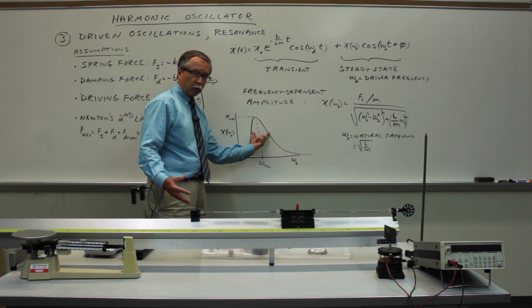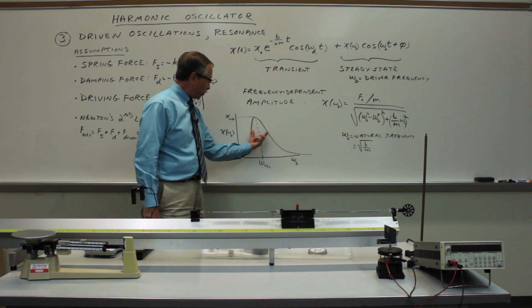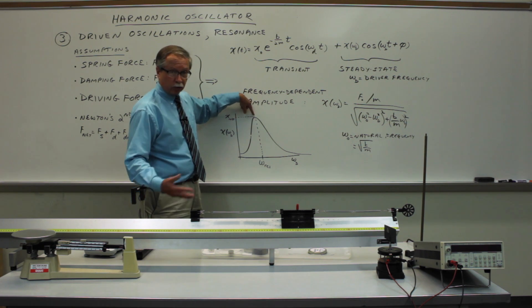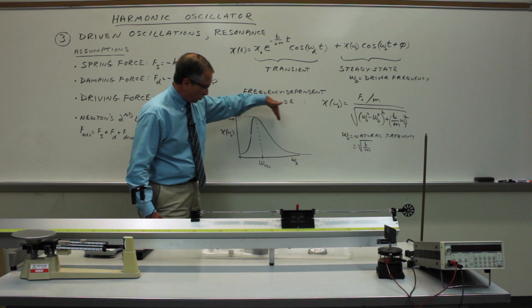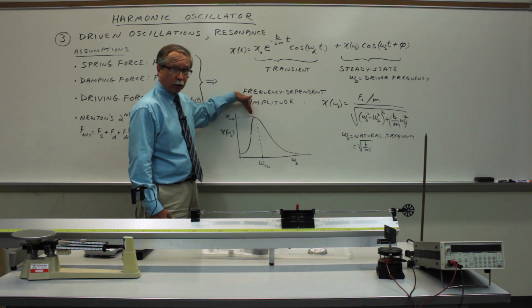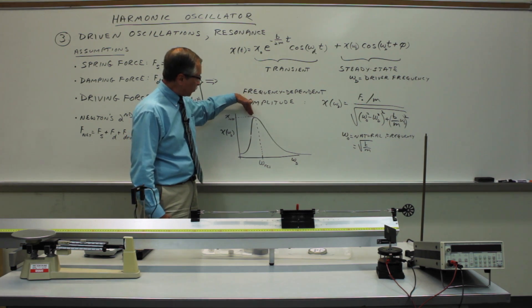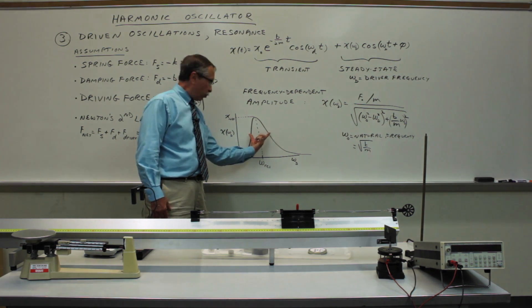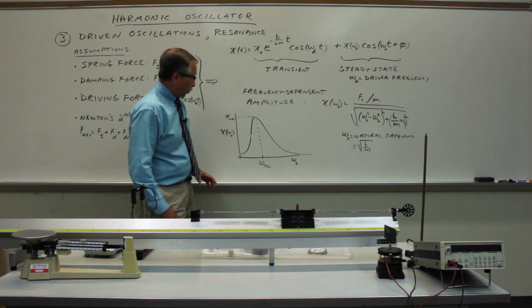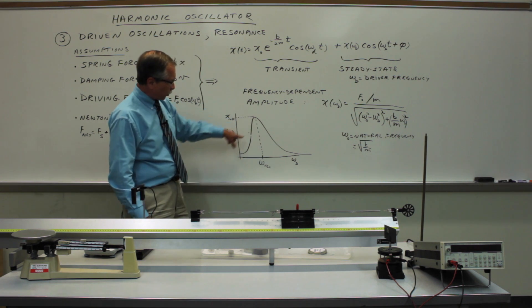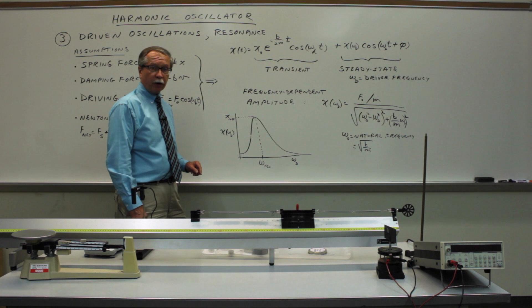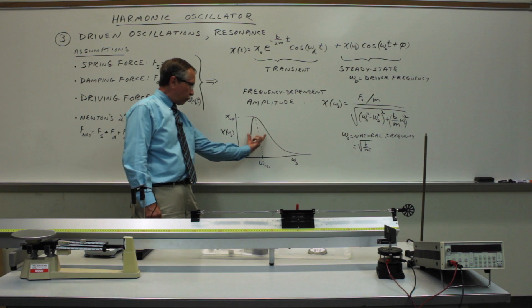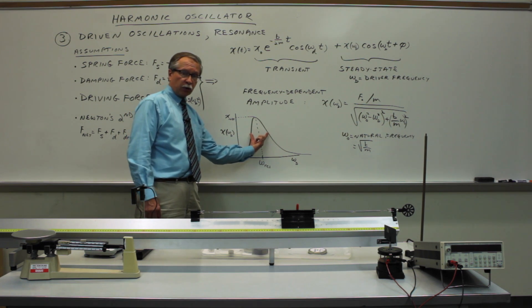Some of the things that you might choose to explore in your measurements include what happens to the resonance frequency as you change the mass or the spring constant. It will shift up or down depending on how you adjust those properties of the system. You might want to explore what happens to the width of this curve as you change the amount of damping. So that's the basic idea. We're going to explore the resonance behavior as you tune the frequency of the driver. Where do you get the maximum response? And over what range of frequencies do you see the response?